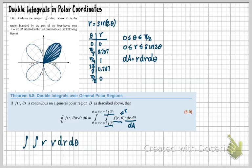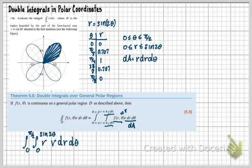So the full setup is: the double integral from zero to pi over two in theta, and from zero to sine of two theta in R, of R times R dr dθ. The lower bound for R is zero, the upper bound is sine of two theta, and theta integrates from zero to pi over two. The most difficult part of these problems is setting up the bounds in polar.